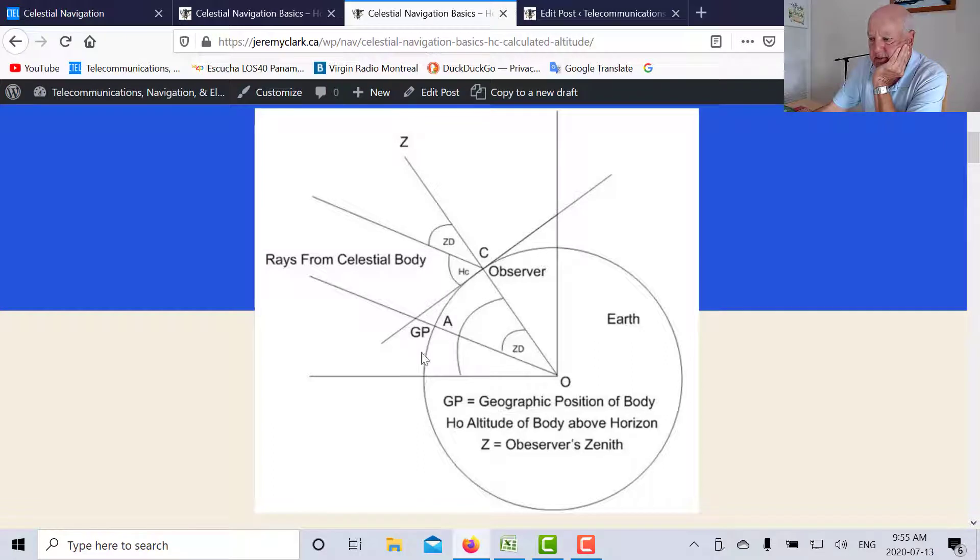What we have here is the earth, and we have a plane. The plane of the paper or the plane of the screen here is a plane perpendicular to the observer, and it goes through the great circle distance between C and GP.